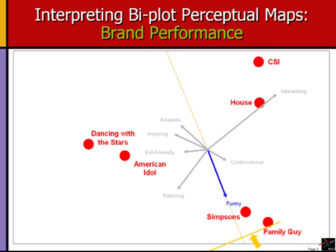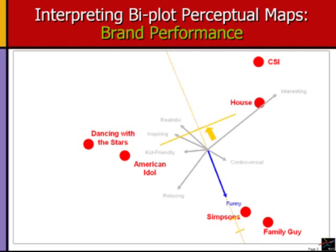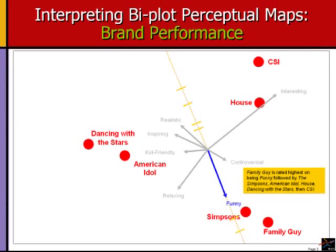Next, move the perpendicular line back in the opposite direction while maintaining its perpendicular position to the attribute vector. The order in which the perpendicular line hits the brands determines how well the brand performs on that attribute. In this example, Family Guy followed by The Simpsons, American Idol, House, Dancing with the Stars, and CSI is the order in which they perform on Funny, where Family Guy performs the best and CSI performs the worst. The relative distances traveled along the attribute vector between the yellow tick marks represent the relative differences in performance ratings among the brands on the attribute Funny.